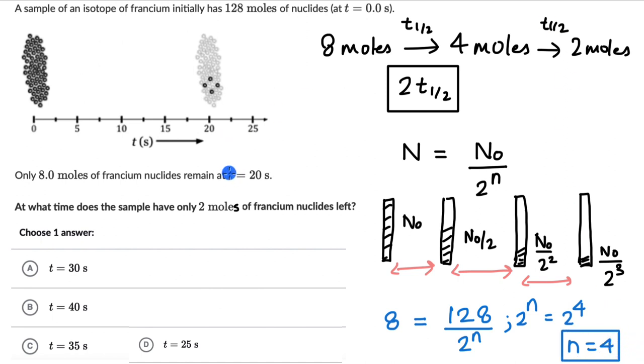And we know the time that it took, that is 20 seconds. So this means that 4 half lives is equal to 20 seconds. So 1 half life is equal to 5 seconds.